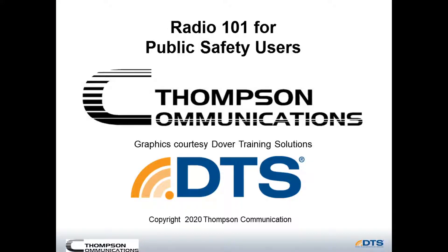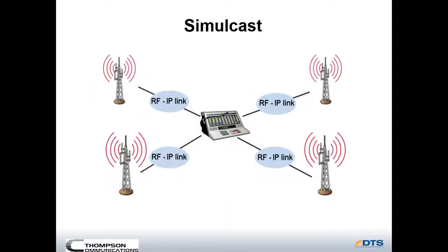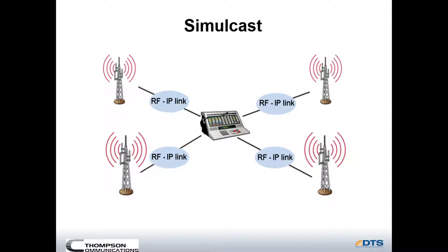Hi, it's Jay Thompson with Thompson Communications. This brief video is an introduction to simulcast systems and receiver voting. Simulcast uses multiple sites on the same frequency transmitting at the same time. This requires precise frequency and timing control to avoid distortion. This has been made much easier since GPS came along.